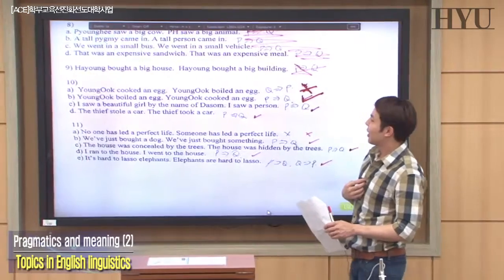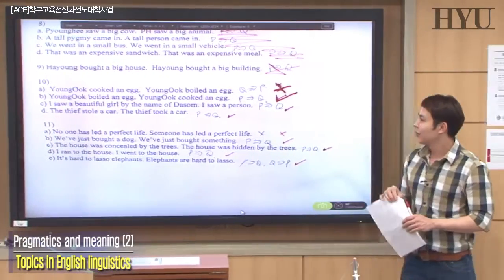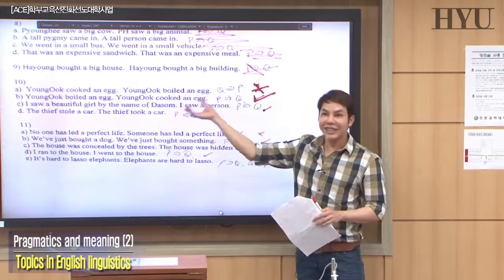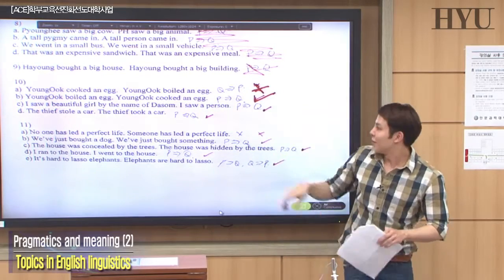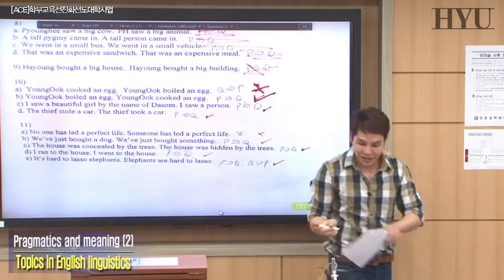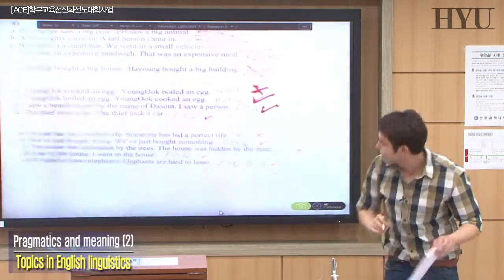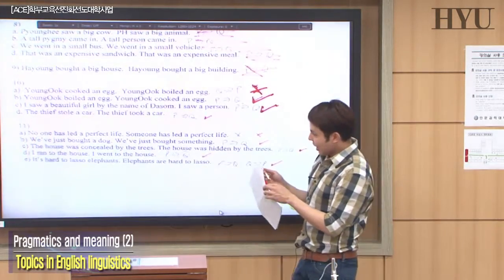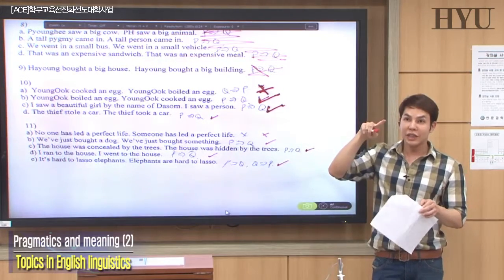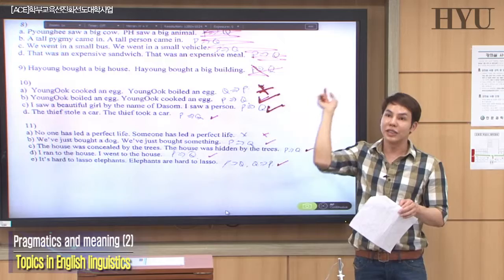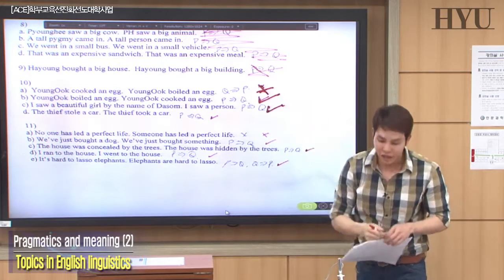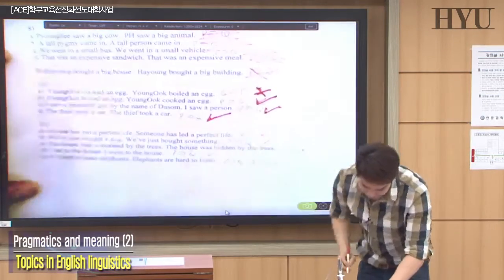Next: 'I saw a beautiful girl by the name of Tassom' and 'I saw a person.' That's an entailment because a beautiful girl is necessarily a person. Also, 'the thief stole a car' and 'the thief took a car' — the first necessarily entails the second because to steal is to take secretly.